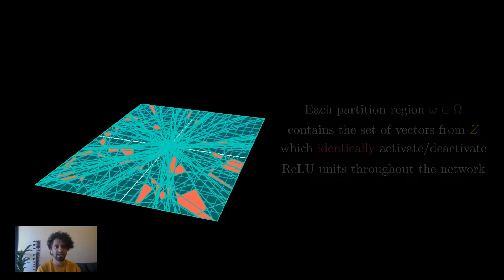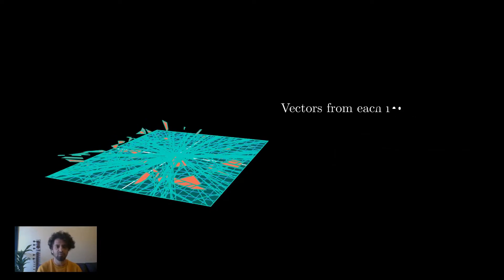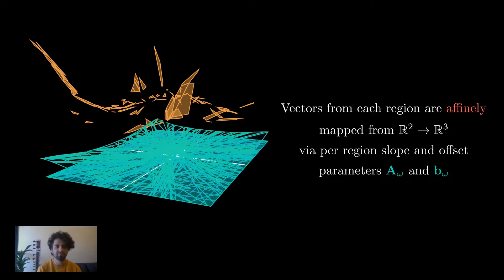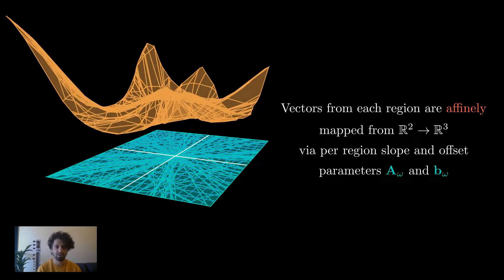Since within a region the activation patterns are identical, vectors from each region are affinely mapped from R² to R³ via per-region affine slope and offset parameters a_omega and b_omega. This essentially implies that the deep neural network is an affine spline operator.